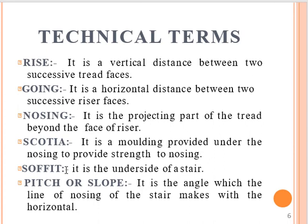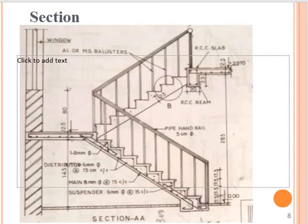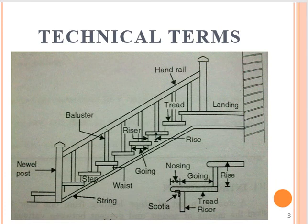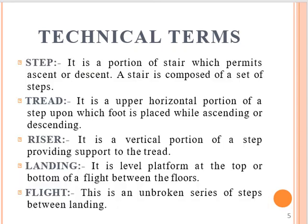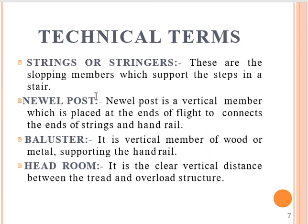The under surface is the soffit. The minimum thickness of the stair slab is called the waist. The newel post is the vertical member placed at the end of a flight to connect the end of strings and handrails. Baluster is a vertical member of wood or metal supporting the handrail.